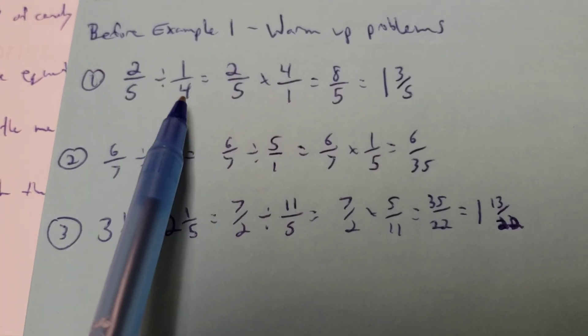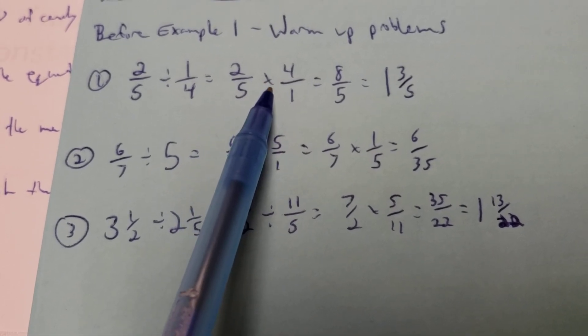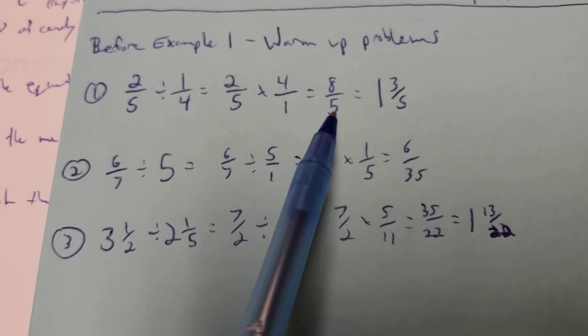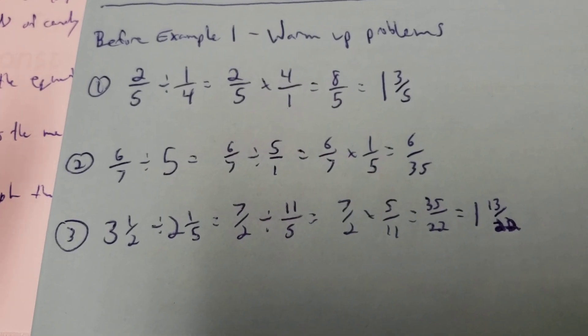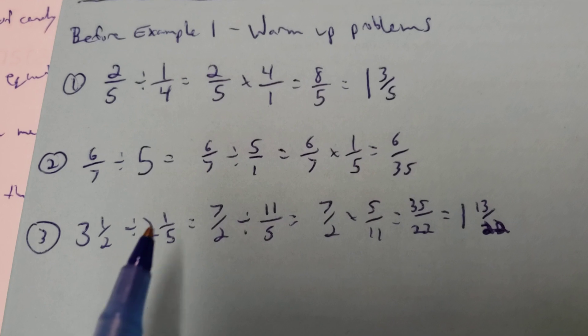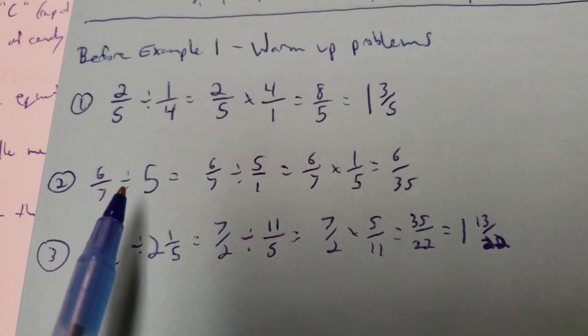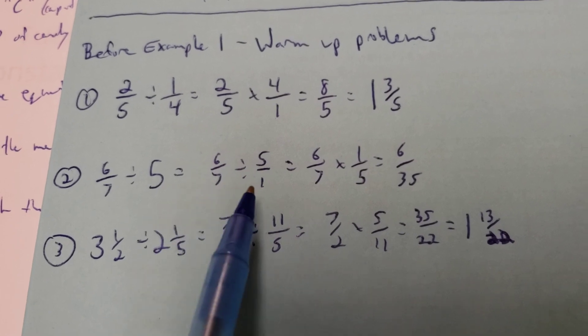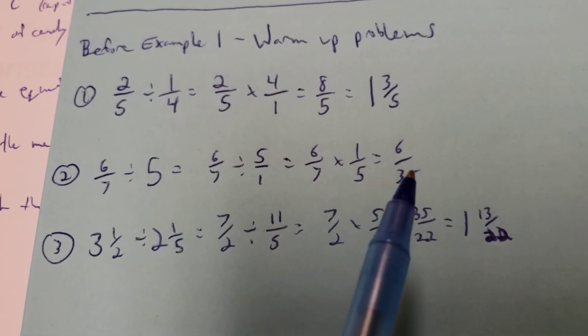If you have a fraction divided by a fraction, remember the phrase of keep, change it to multiplication, and then flip the second fraction. And then don't leave your answers as an improper fraction, convert them back to a mixed number again. So that's from a few weeks ago.